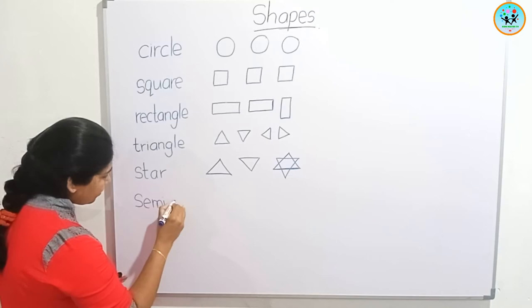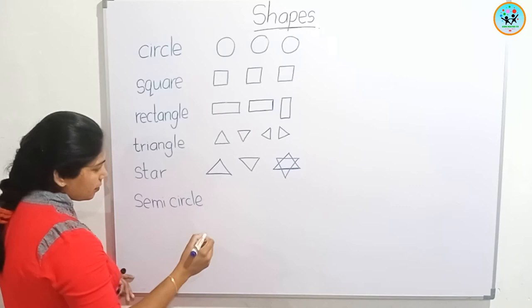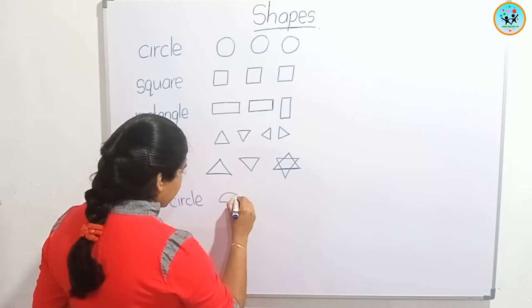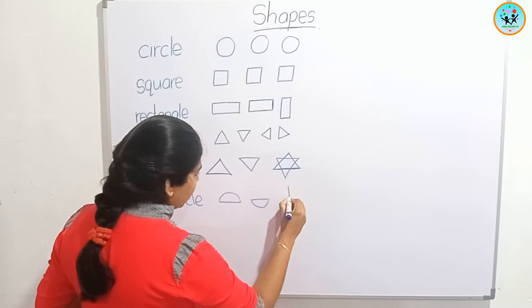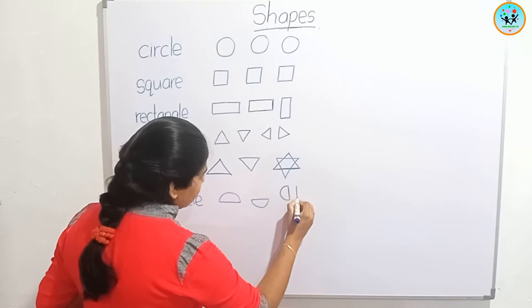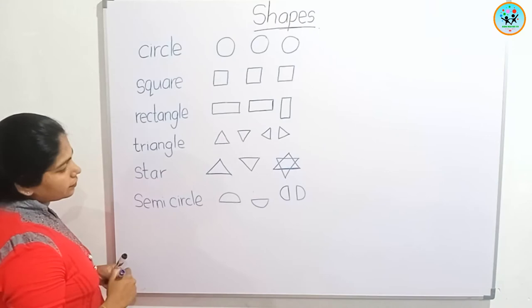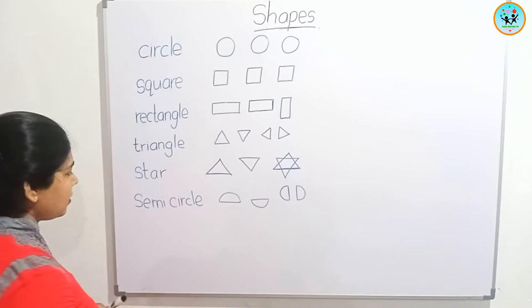Next is semicircle. Semicircle. Draw it like this. Different ways we can make the semicircle.